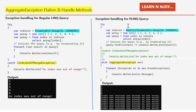But what happens when we parallelize this query using PLINQ to speed things up? Here I have written indices as ParallelEnumerable.Range(0, 1000000). The int array again contains one through five. The parallel query is written as: from index in indices select array[index]. I execute the query using query.ForAll(result => Console.WriteLine(result)).